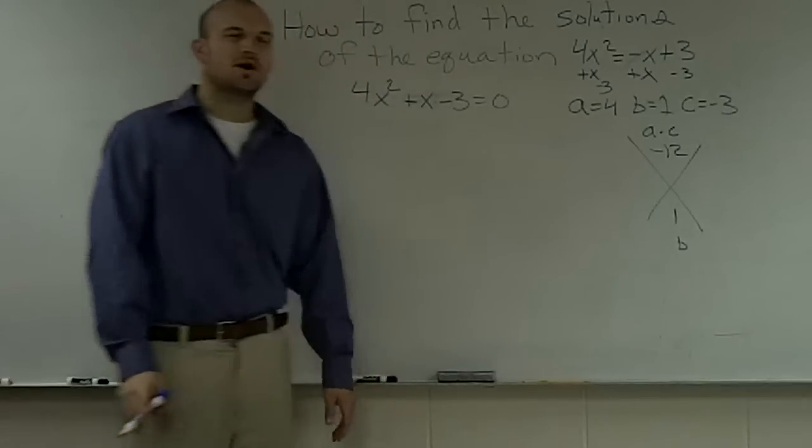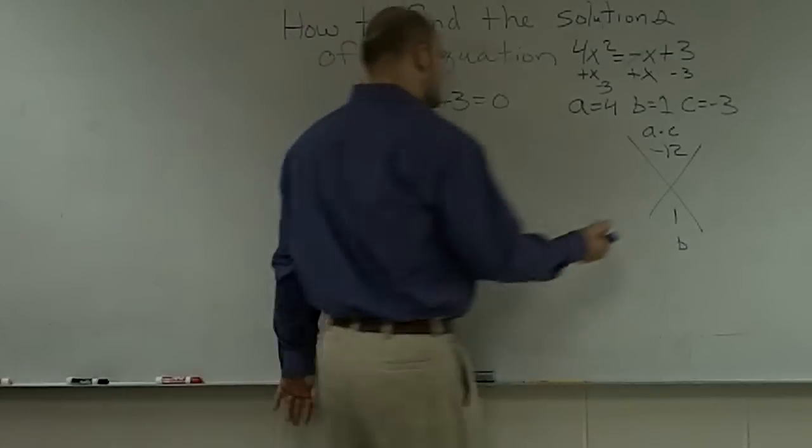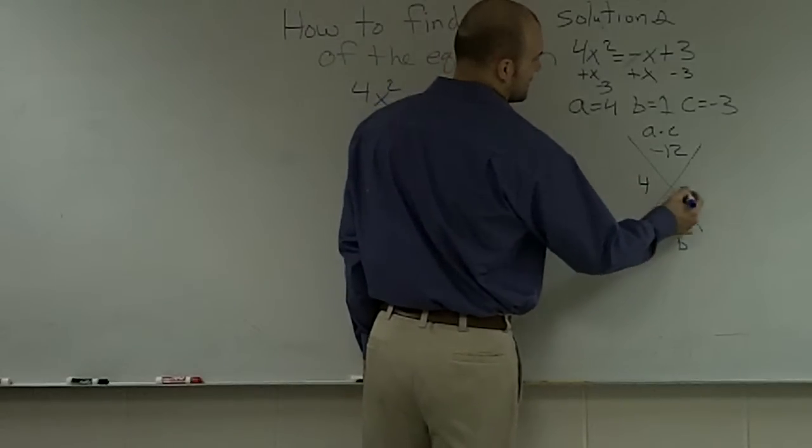So I look at it, what are my factors of 12 that multiply to give me negative 12 but add to give me 1? That is just going to be a positive 4 and a negative 3.